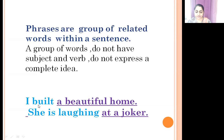See this example: 'I built a beautiful home.' Here in the sentence, see the underlined words — 'a beautiful home.' Does it have a subject? No. Does it have a verb? No. Does it express a complete thought or idea? No.